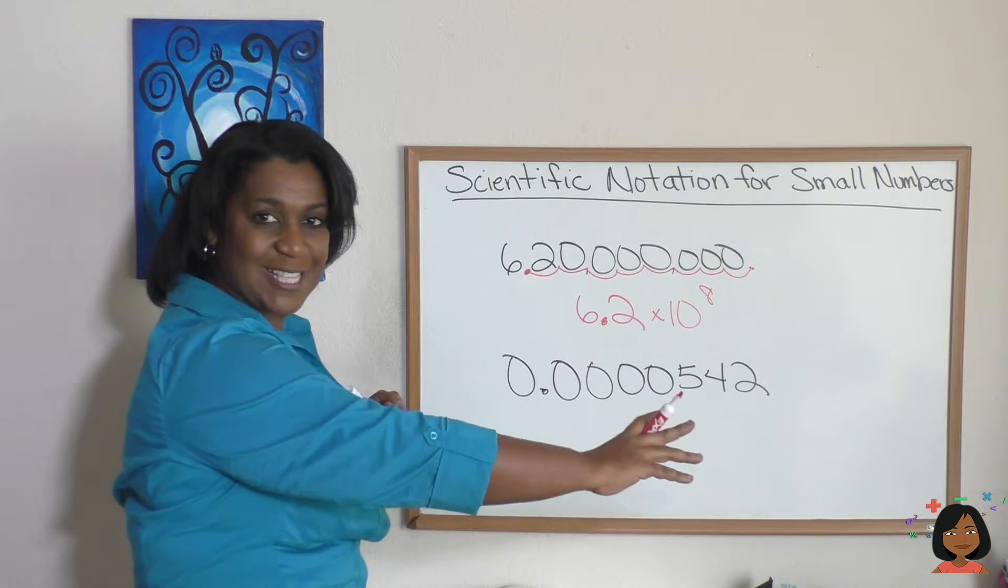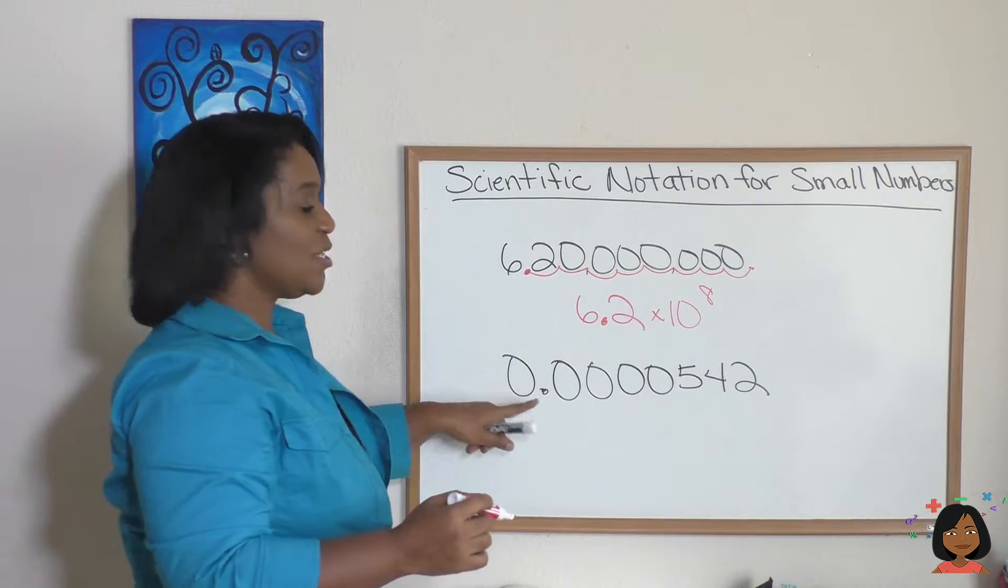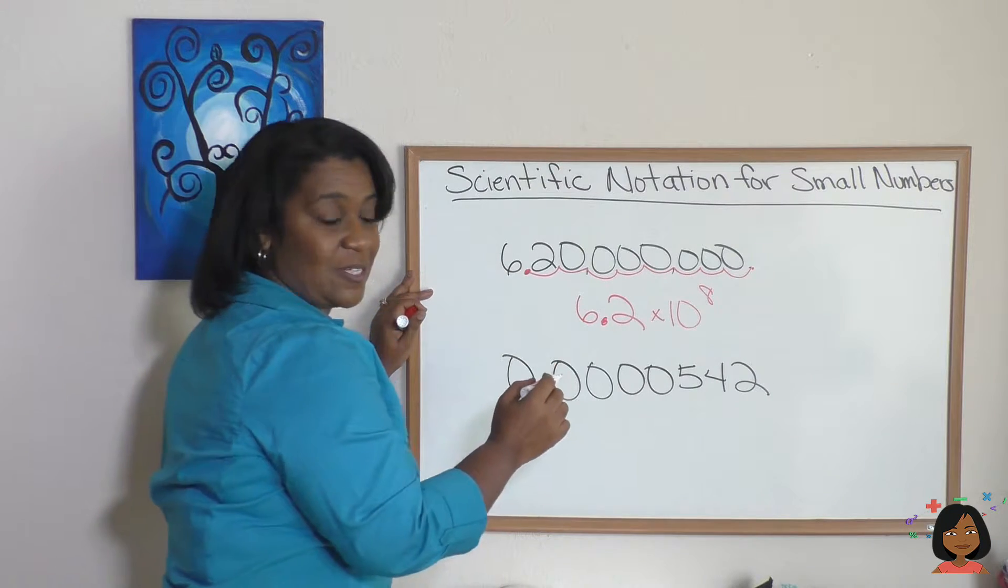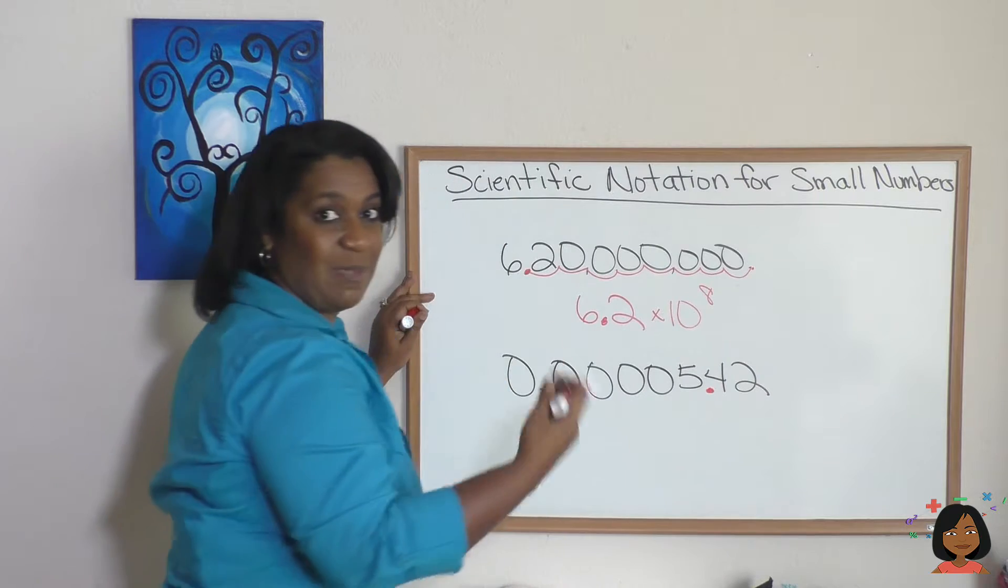Here's a nice small number, a nice long decimal. We have a decimal here and we want to move it so we can get a whole number right in the beginning.